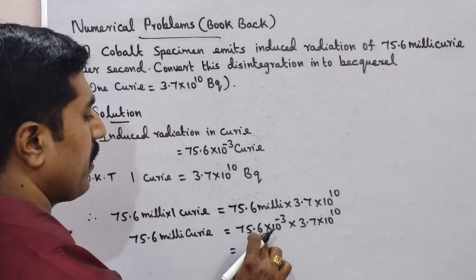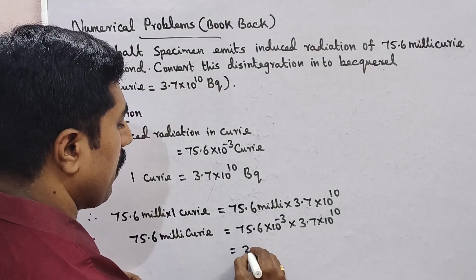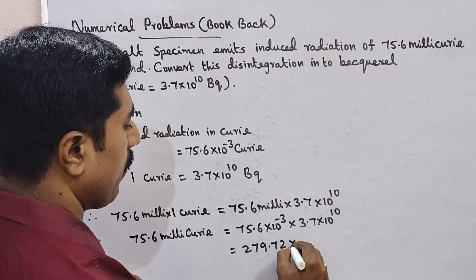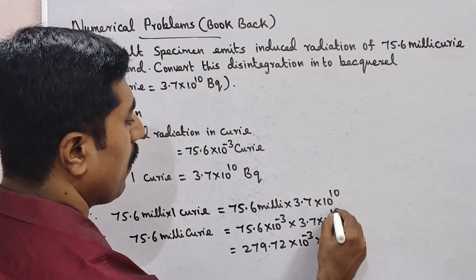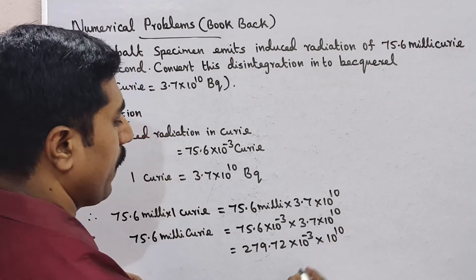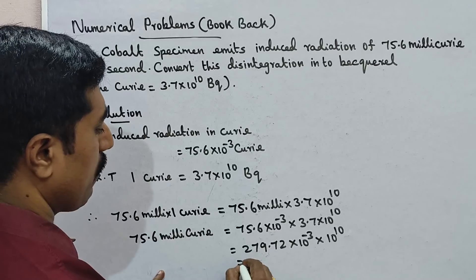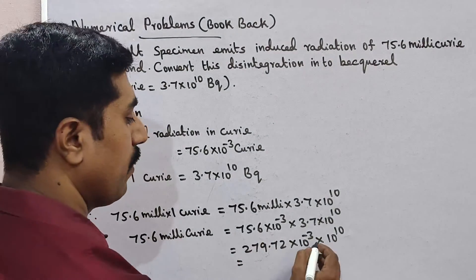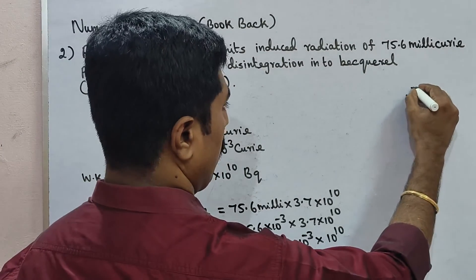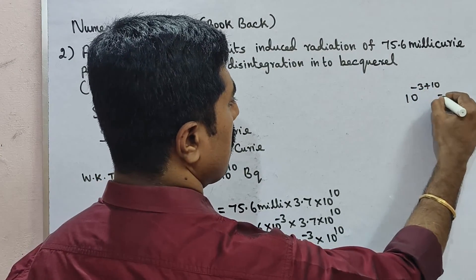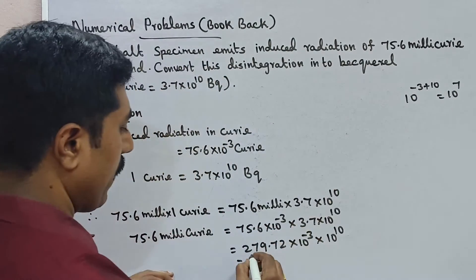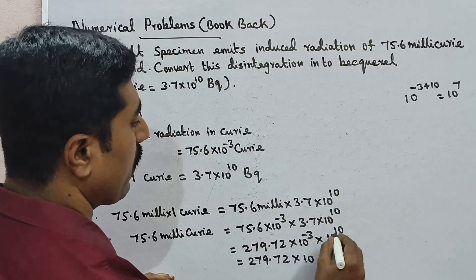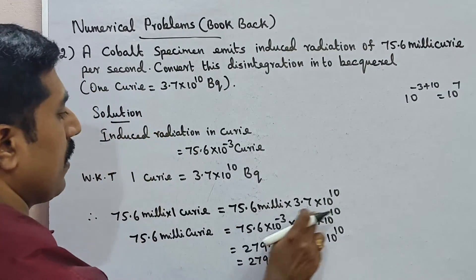75.6 into 3.7 equals 279.72, into 10 power minus 3 into 10 power 10, which is equal to 10 power 7. So, 279.72 into 10 power 7.